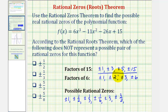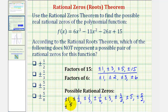Moving to p = 5: plus or minus five over one is plus or minus five; plus or minus five over two is plus or minus five-halves; plus or minus five over three is plus or minus five-thirds; and plus or minus five over six is plus or minus five-sixths.